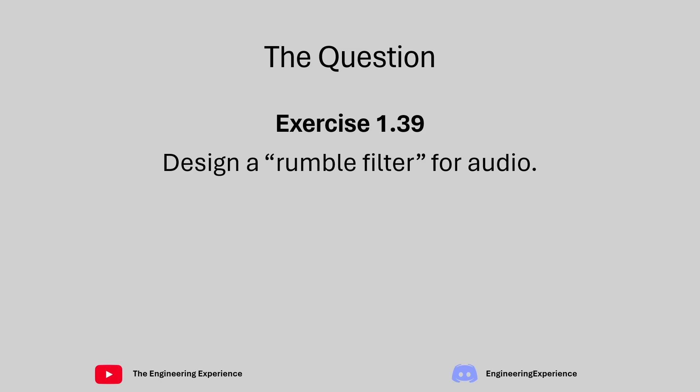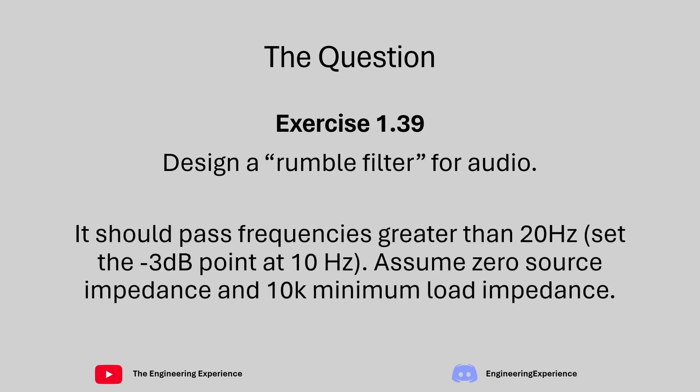The question says design a rumble filter for audio applications. The filter should pass frequencies greater than 20 hertz. The requirement is to set the cutoff frequency, the 3 dB point, at 10 hertz. We assume we have a perfect source so its impedance is basically zero and the load impedance is a minimum of 10 kilo ohms.